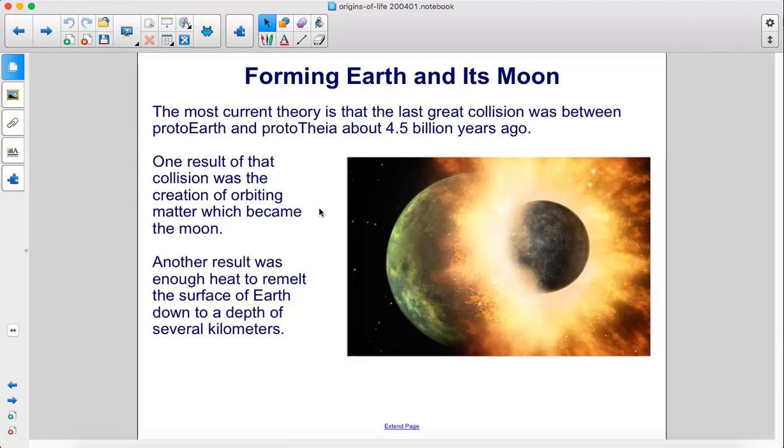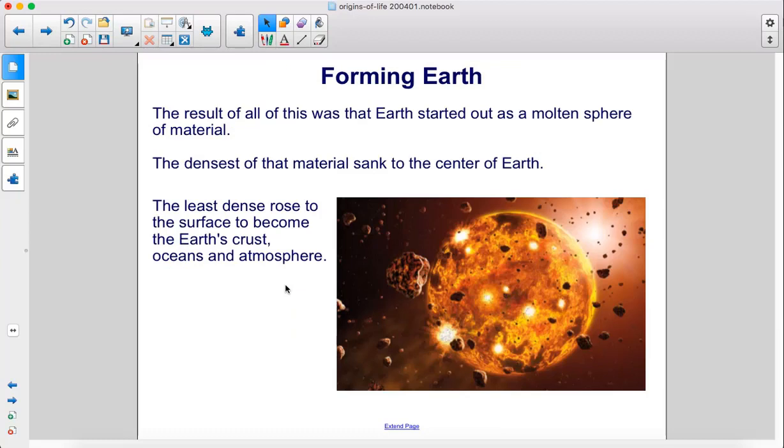Another result was enough heat to re-melt the surface of Earth down to a depth of several kilometers. The result of all of this was that Earth started out as a molten sphere of material.